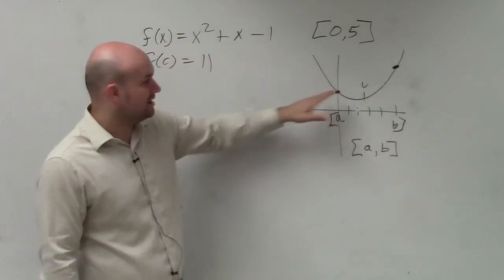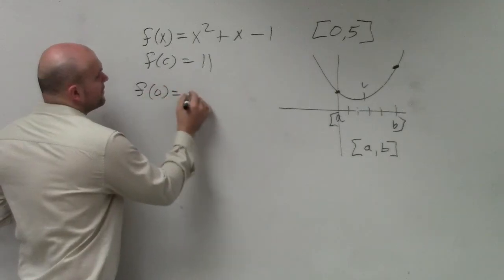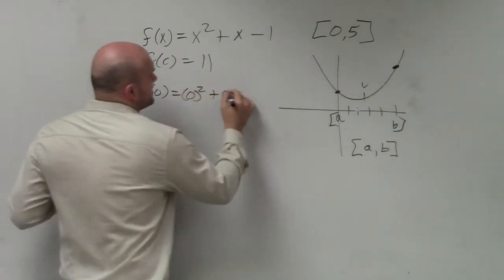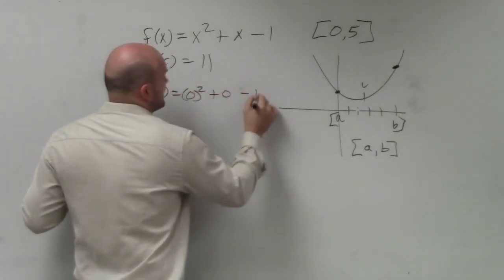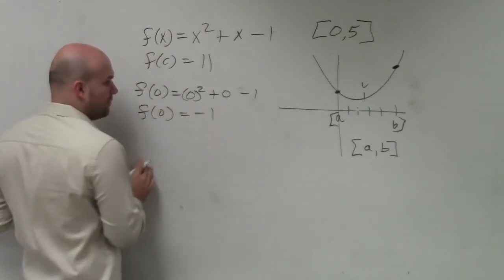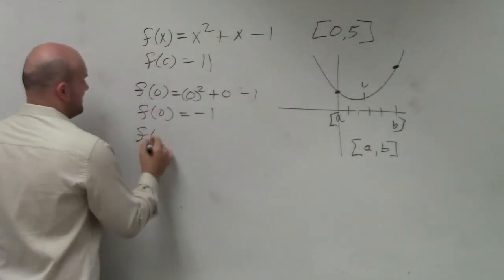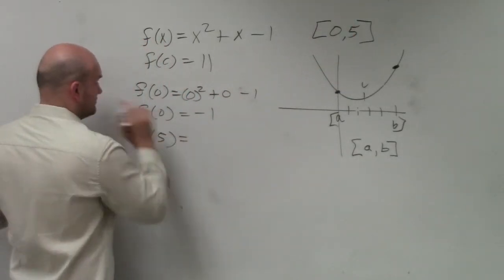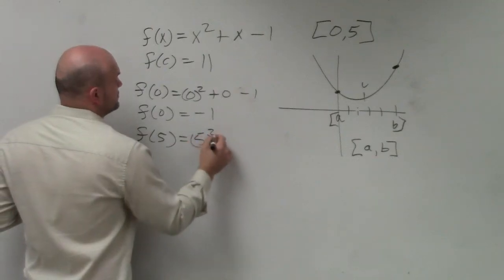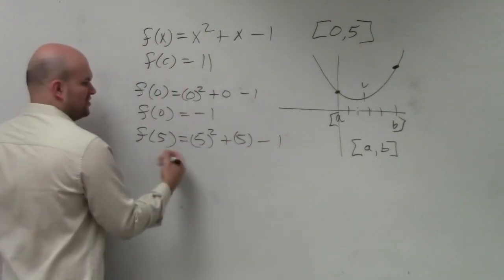So to find the lower limit, we apply f of 0, which is 0 squared plus 0 minus 1. So we could say f of 0 equals negative 1. And then we need to apply the upper limit, which is f of 5. So that's 5 squared plus 5 minus 1, 25, 30, 29.